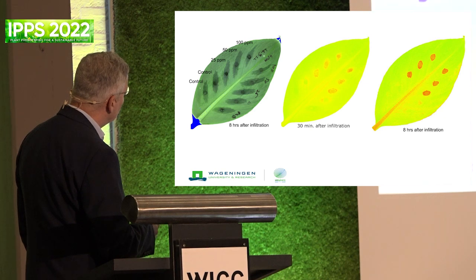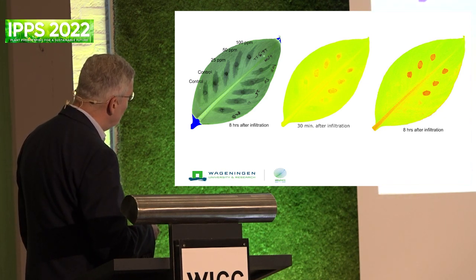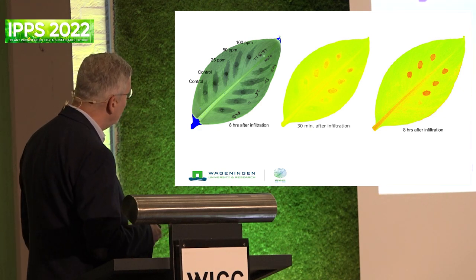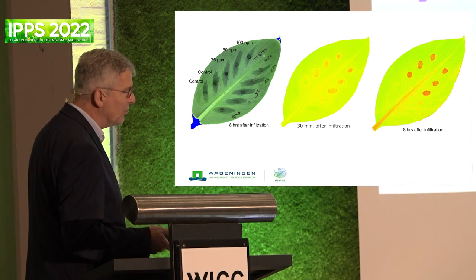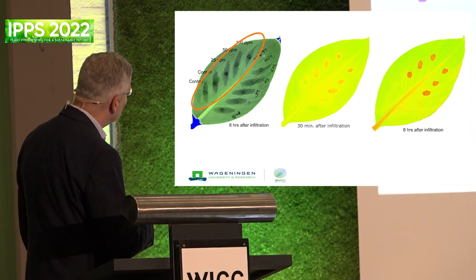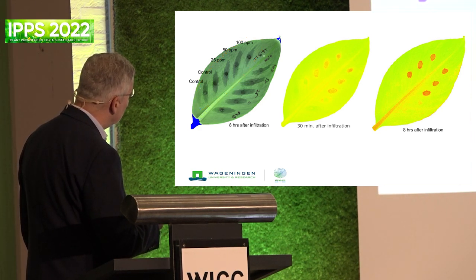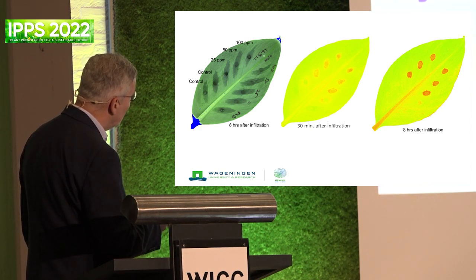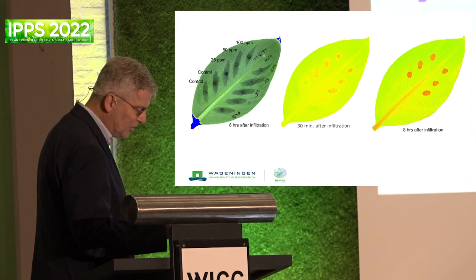Here you have an example where we infiltrate a banana leaf with juglone - one of the metabolites produced by Pseudocercospora fijiensis that plays a role in pathogenesis. Here you see the controls. We just did this this week. Thirty minutes after infiltration, you already can see by imaging the effect of juglone, and this is eight hours later - it's very rapid. We can detach these leaves and process them for image analysis.